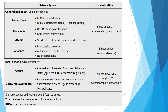Let's summarize the different types of seizures and the medications used. In generalized seizures, tonic-clonic seizures involve loss of consciousness, a post-ictal state, diffuse contraction (tonic phase), and jerking (clonic phase). Myoclonic seizures have no loss of consciousness and no post-ictal stage—only brief jerking of specific muscle groups or one half or the whole body. In atonic seizures, there is sudden loss of muscle tone causing the patient to fall. For tonic-clonic, myoclonic, and atonic seizures, the medications are broad-spectrum: levetiracetam or valproic acid.